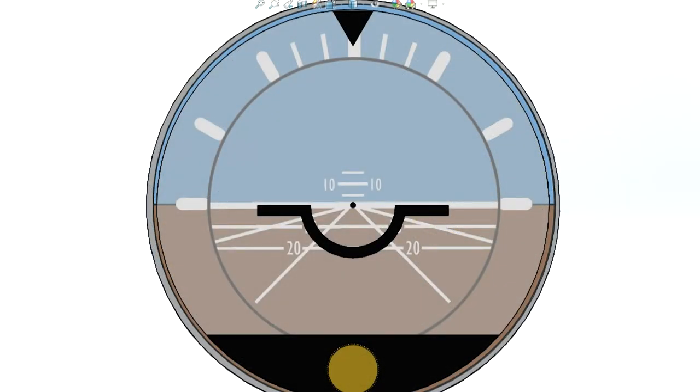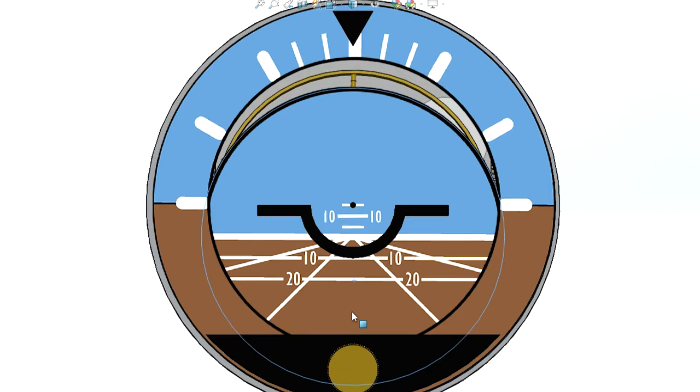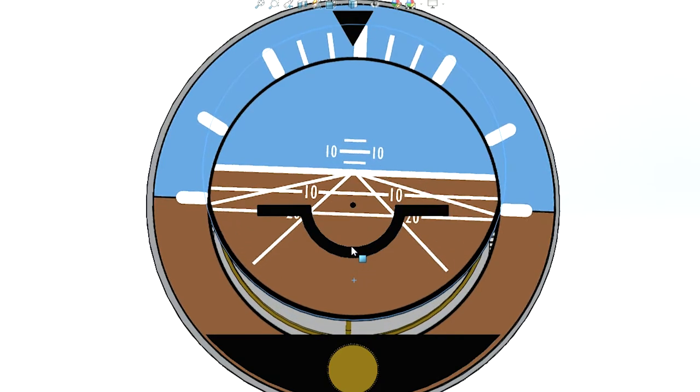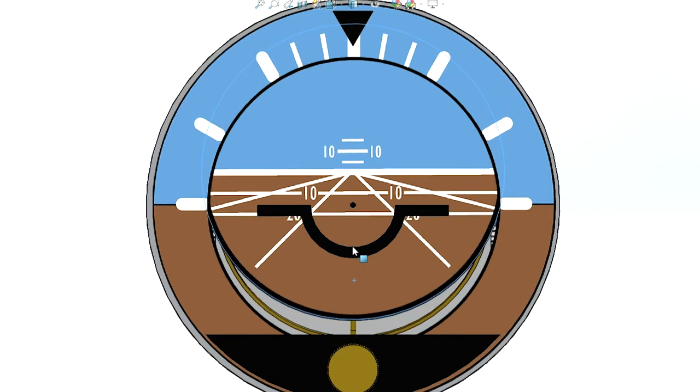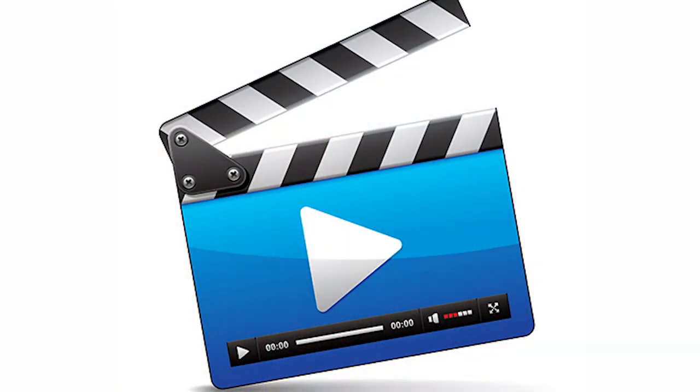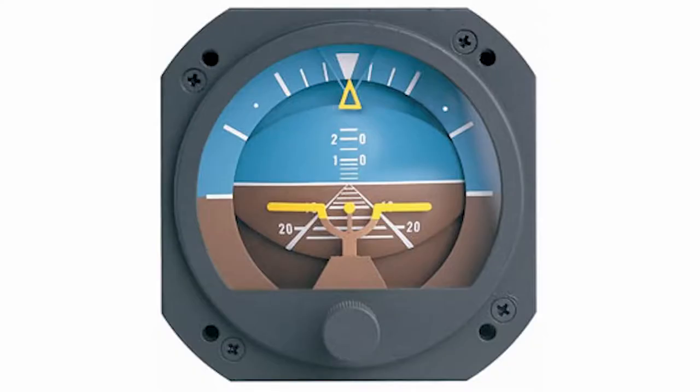For you to clearly visualize the attitude indicator, let us try and move the attitude indicator. As you can see, if I move the attitude indicator down, it shows that the aircraft is pitching up. While on the other hand, if I move the attitude indicator up, it shows that the aircraft is pitching down. For you to better understand, let me show you a short clip of an attitude indicator when an aircraft is pitching up or down in an aircraft simulation.